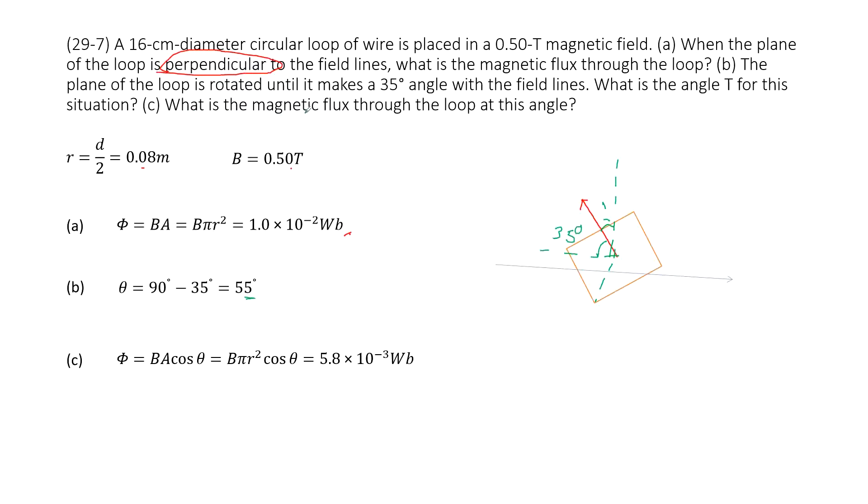Third one, what is the magnetic flux through the loop at this angle? So that is easy, B A cosine θ, right? So now this θ is just 55 degrees. Alright, so you input all the given quantity, get the answer there. Thank you.